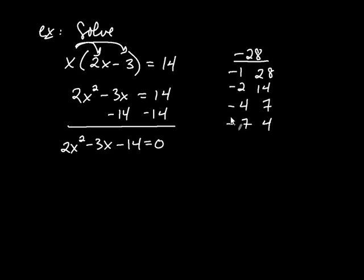Then what do you do? Well, this combination of numbers here, you take them and you write the negative 3 as negative 7 plus 4. So it's going to be 2X squared minus 7X plus 4X minus 14 is equal to 0. That's the whole point of finding negative 7 and positive 4. You use those numbers to split up the negative 3.